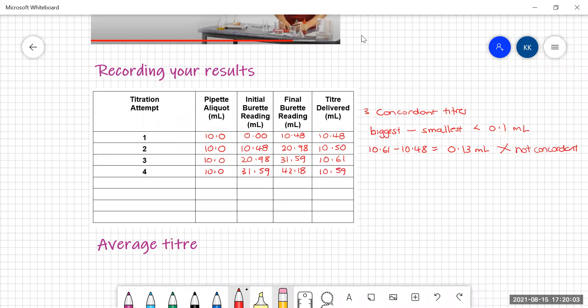So if I chuck out the worst one, if I chuck this one out because that's really bad, now I'm looking at 10.59 minus 10.48, 0.11 mils. Oh, it's still not concordant. It has to be less than 0.1. So I have to go again.